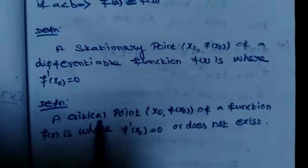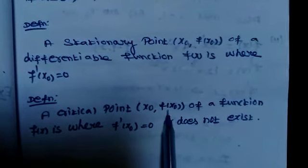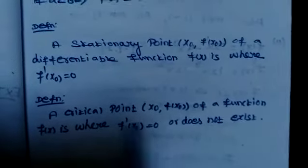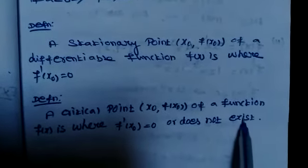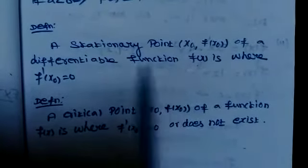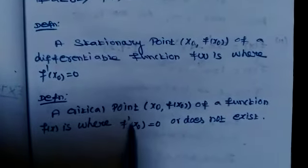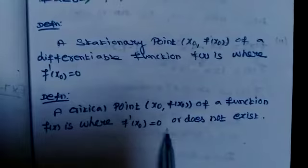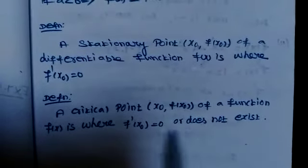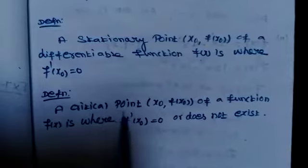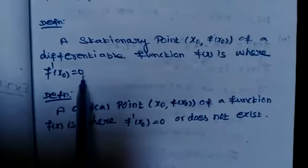Next: critical point. A critical point (x₀, f(x₀)) of a function f(x) is where f'(x₀) equals 0 or does not exist. Note that a stationary point requires only f'(x₀) equal to 0, but a critical point covers both cases: f'(x₀) equal to 0 or does not exist.